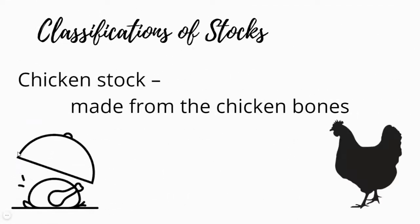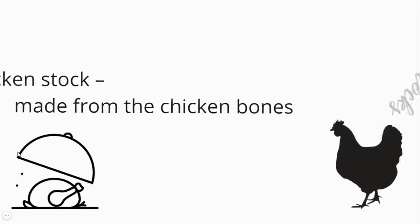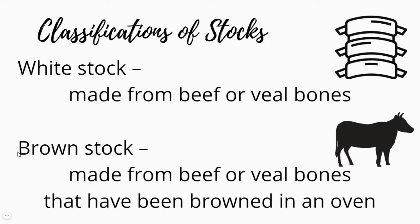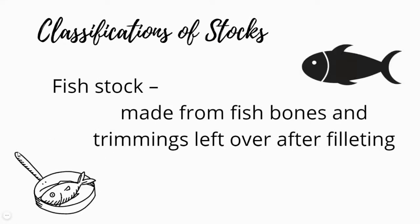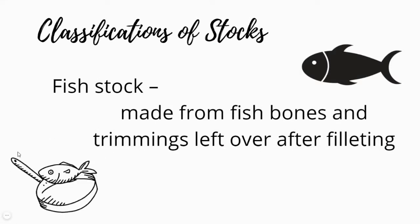Stocks can be classified according to the kind of meat as follows: Chicken stock, made from chicken bones. White stock, made from beef or veal bones. Brown stock, made from beef or veal bones that have been browned in an oven. Fish stock, made from fish bones and trimmings left over after filleting.